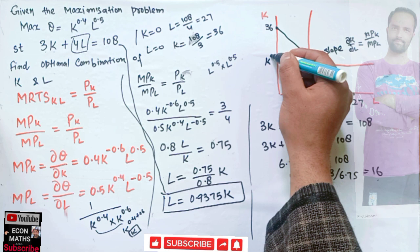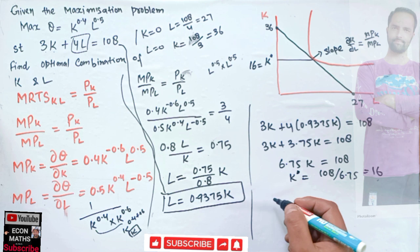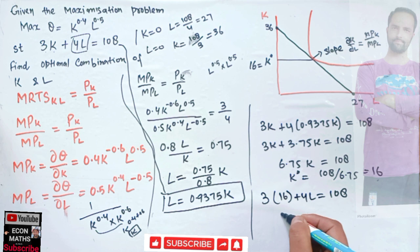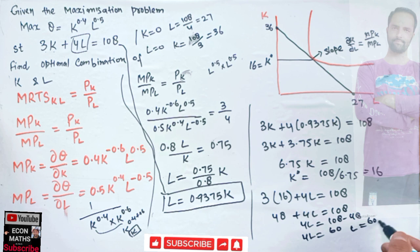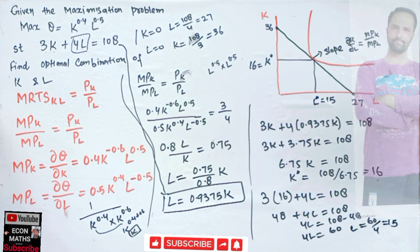To find the optimal labor, substitute k = 16 back into the production constraint: 3(16) + 4l = 108, so 48 + 4l = 108, giving 4l = 60, and l = 15. Therefore l* = 15. This is how we solve the constrained maximization problem. The optimal combination is k* = 16 and l* = 15.